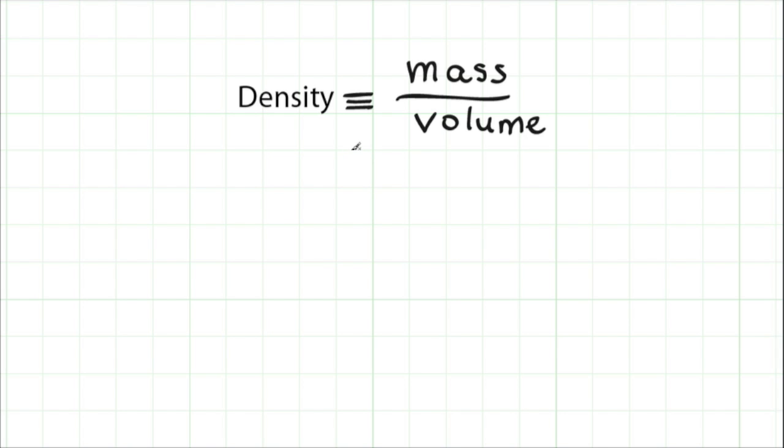It's useful to recognize that there are actually two types of density. First, there's average density. And then there is density at a point.